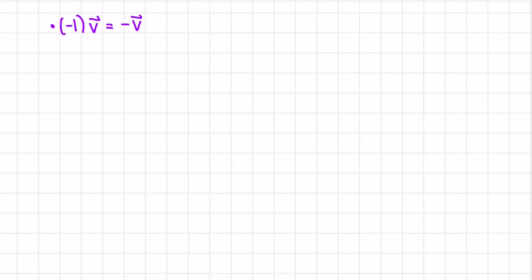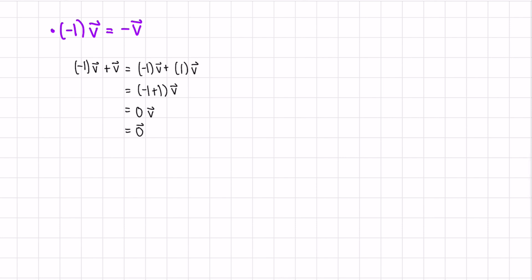Next, let's see why negative one times vector v is the same as the negative vector. If it is the negative vector, then (-1)v + v should equal zero. We rewrite this as (-1)v + 1v, and by distributivity of scalar addition, we factor out v: (-1 + 1) times v equals zero times v, which equals the zero vector. So negative one times v has the property of the negative vector, meaning it must be the negative vector.